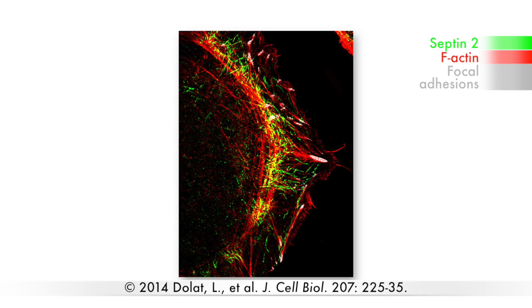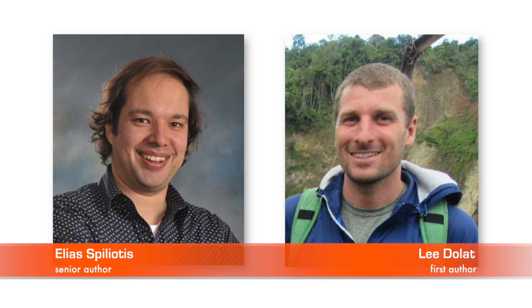Septins are a family of GTPases that polymerise to form heteromeric filaments that perform a variety of functions in the cell. For example, Elias Spiliotis and Lee Dolat, together with their colleagues at Drexel University in Philadelphia, have previously demonstrated that septin filaments help to organise actin stress fibres in the leading lamella of migratory epithelial cells.